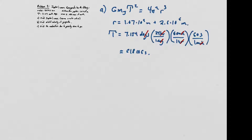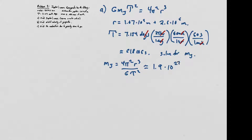Now we have r and the period, so we can do the algebra and solve for the mass of Jupiter. The equation is: mass of Jupiter = 4π²r³ divided by G times the period squared. Plugging in all these numbers carefully gives approximately 1.9×10²⁷ kilograms. As a gut check, that's much larger than Earth's mass but smaller than the Sun's mass, so we're in the right ballpark.